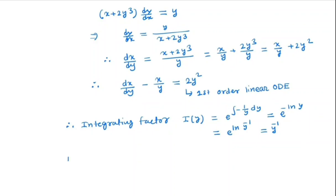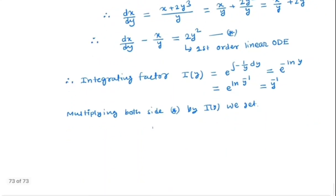So multiplying both sides of this equation by I(y) we get d/dy of (x·y⁻¹) is equal to 2y²·y⁻¹, which is nothing but 2y.